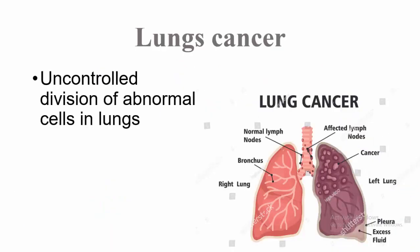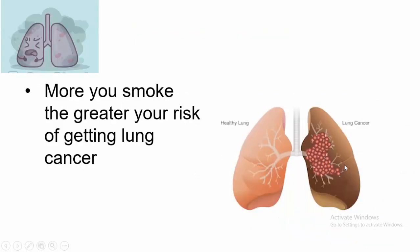So first of all, what is Lung Cancer? Lung Cancer is the uncontrolled division of abnormal cells in the lungs. In this diagram, we can see the normal lung and the cancerous lung. These are the cancerous cells. The more you smoke, the greater your risk of getting lung cancer. This is the healthy lung and this is the lung with cancerous cells.